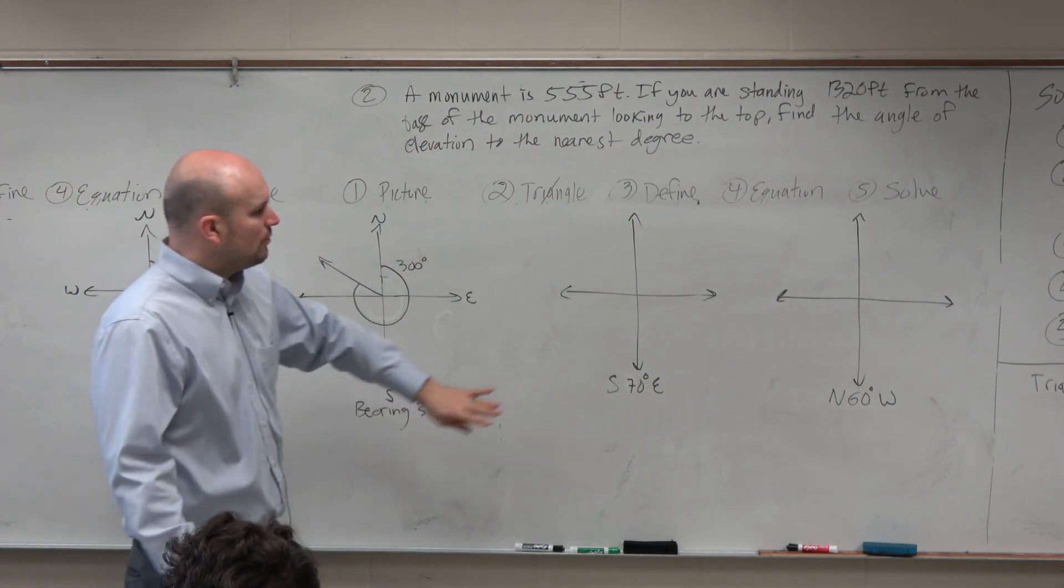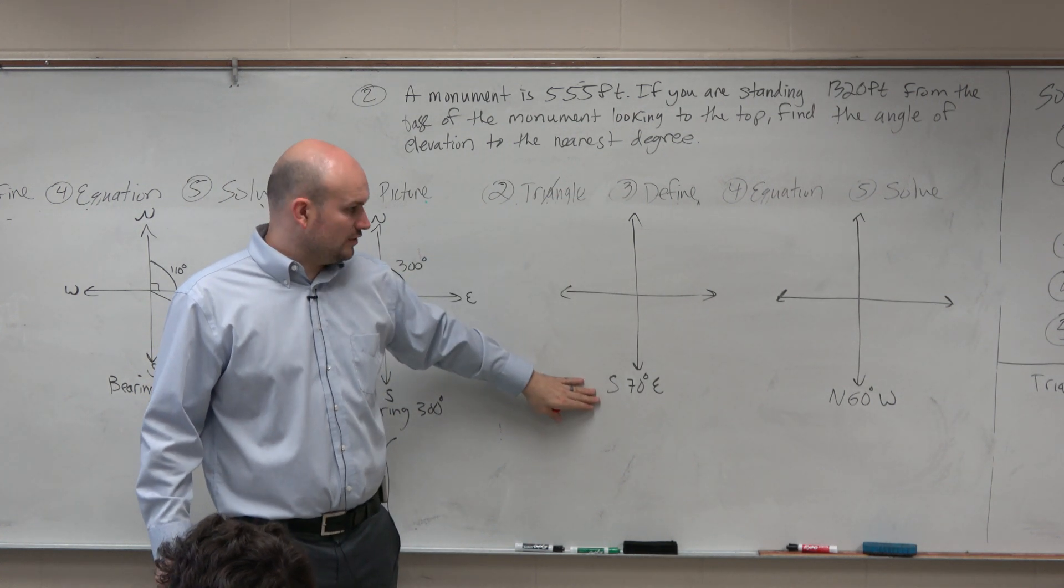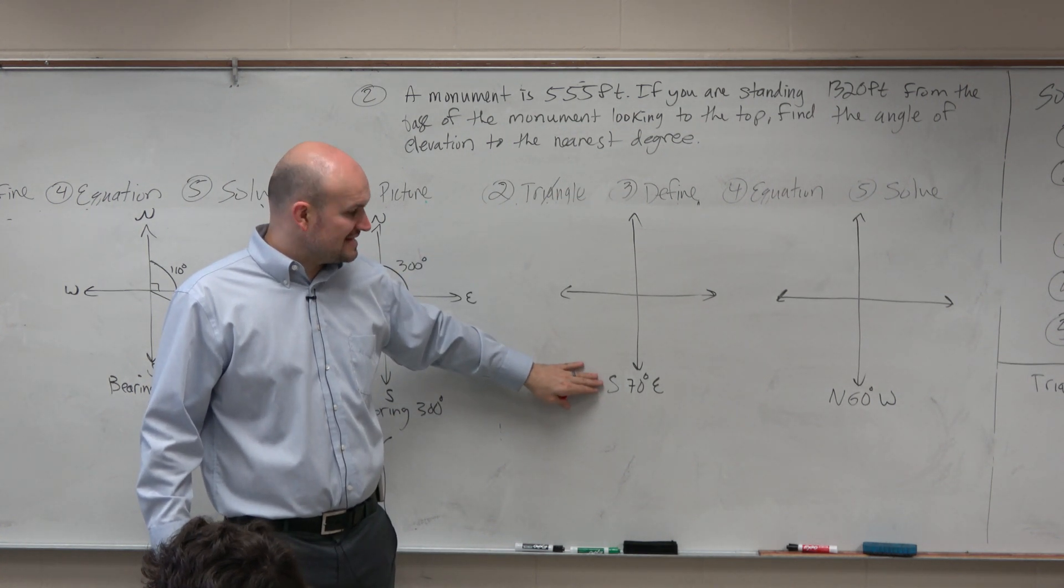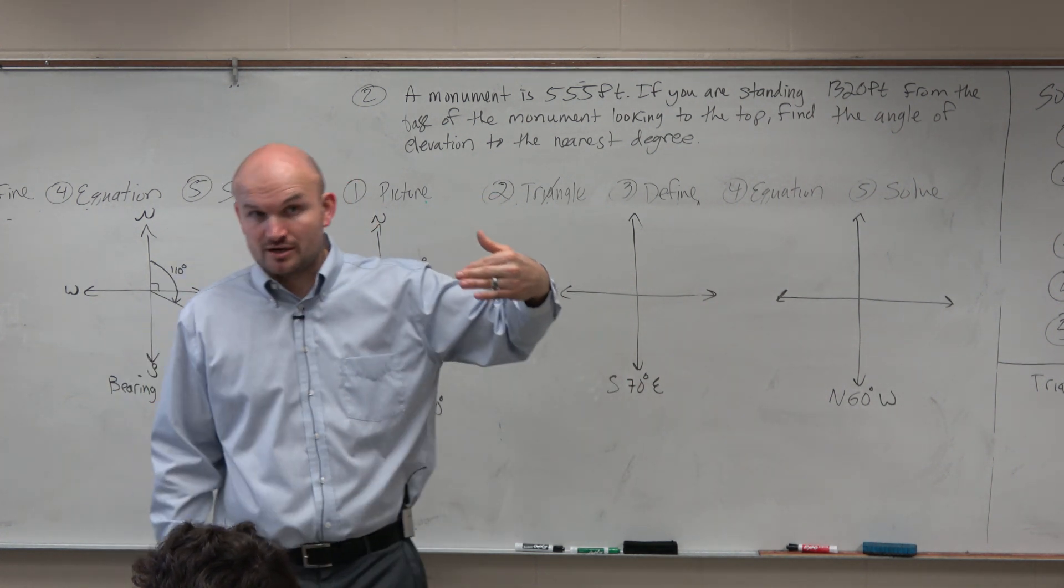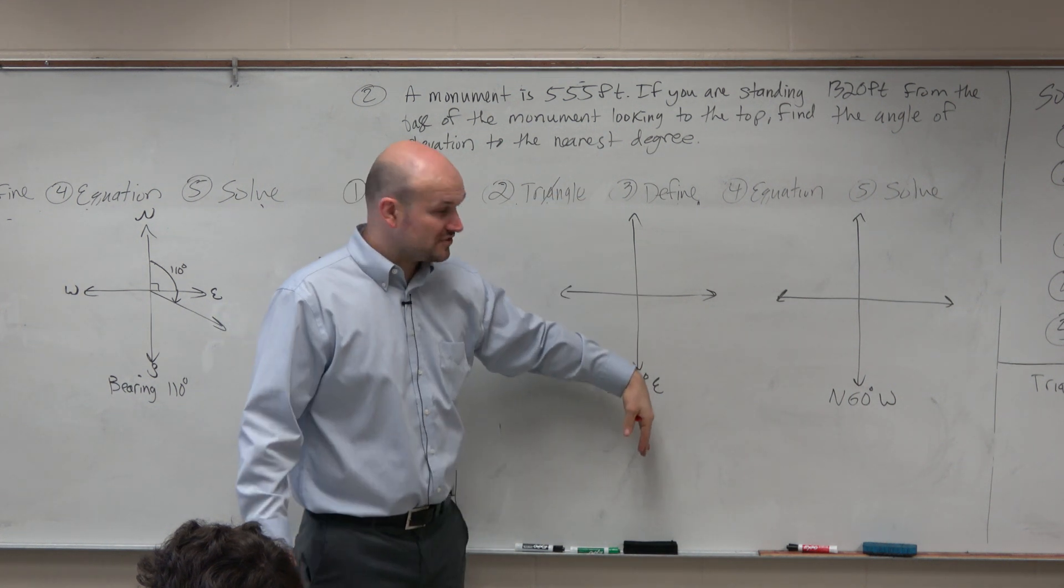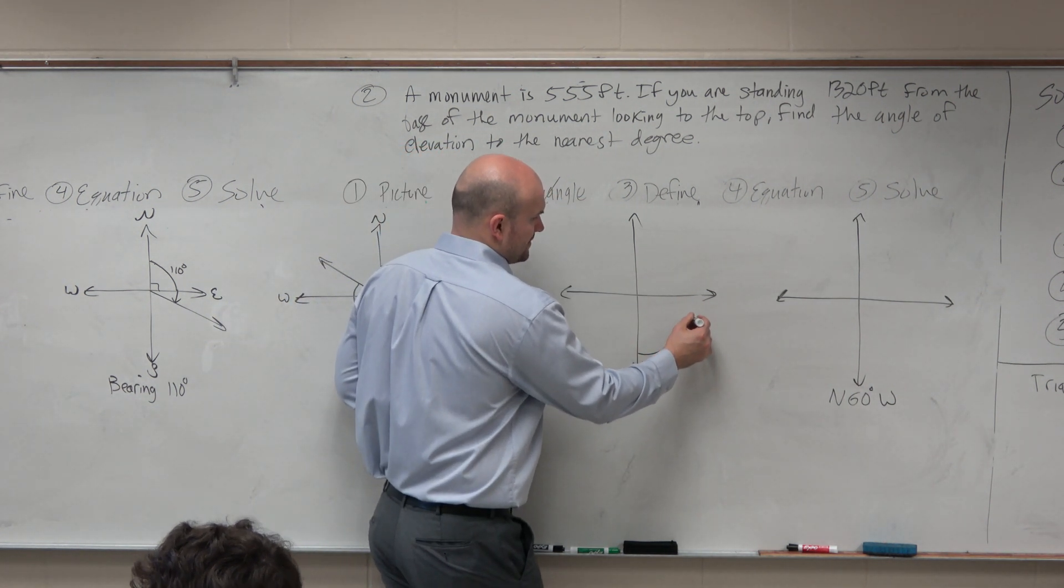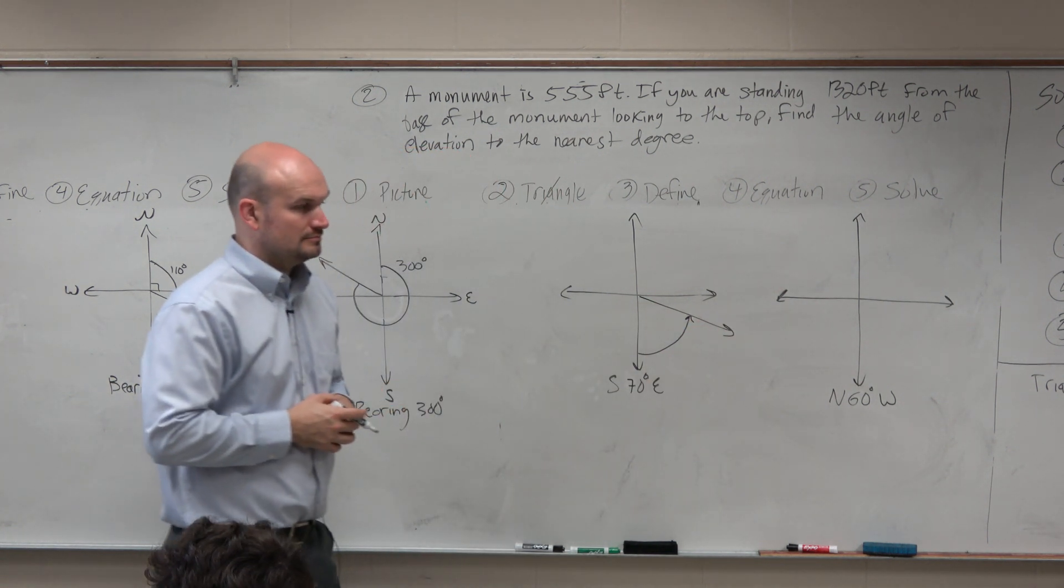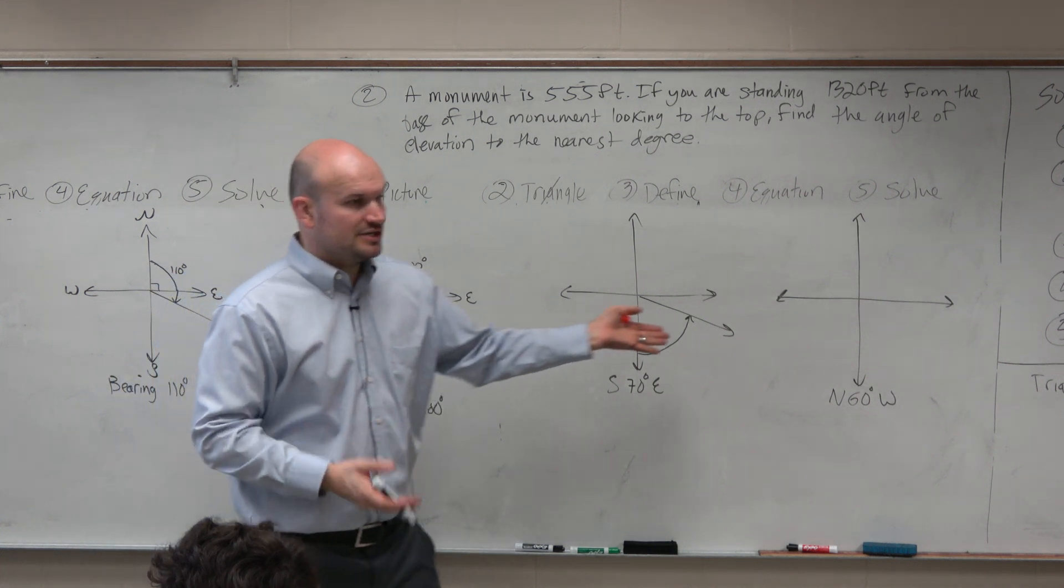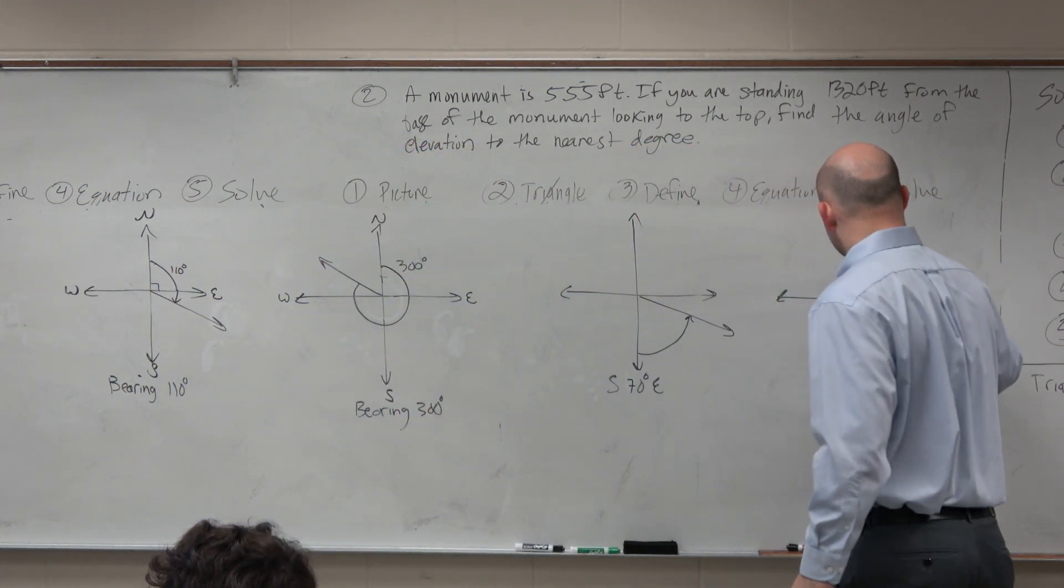Then the next thing is, well, what if sometimes, when would they not start at due north? Well, what if I gave you a bearing that looked like this, which is south, 70 degrees east. So what that means is now it's telling you where to start. You are going to start due south, and you're going to travel 70 degrees to the east. Or I could start at due north again, and I can say north, 60 degrees west.